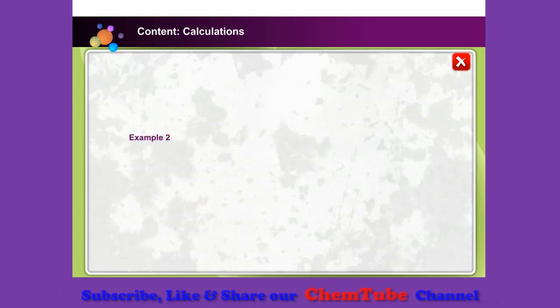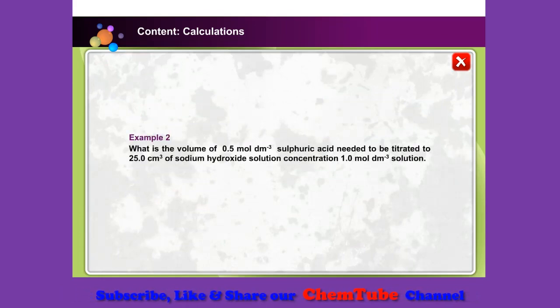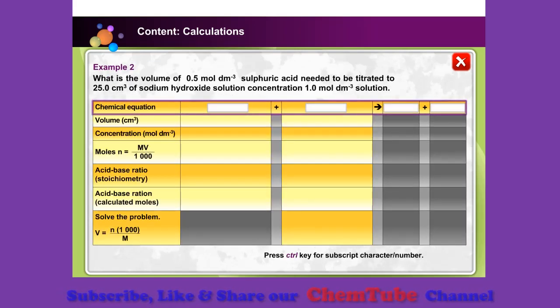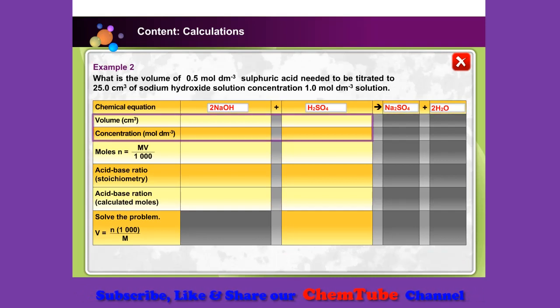In this example, you are required to calculate the volume of sulphuric acid used in the acid base titration. Then, key in the chemical equation. Now, key in all the information given, the volume and the concentration of the solution.